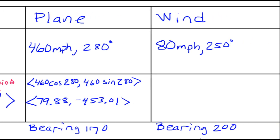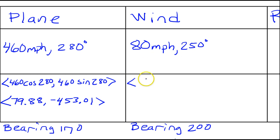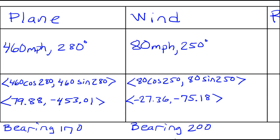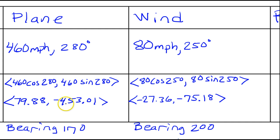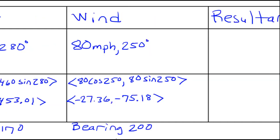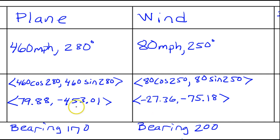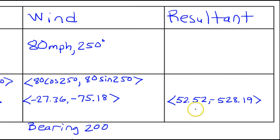For the wind, the horizontal component is 80 cosine 250, which equals negative 27.36, and the vertical component is 80 sine 250, which equals negative 75.18. Now that we have both vectors in component form, we find the resultant by adding horizontal with horizontal and vertical with vertical. The resultant vector is 52.52 for the horizontal and negative 528.19 for the vertical component.